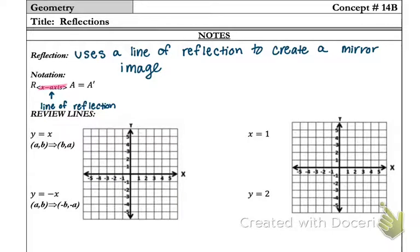So what we're going to do is review some common lines. So the first line is going to be the line y equals x that I'm going to go ahead and draw here. So I have a line that's going through my origin and it has a slope of 1, so it's just going up 1 over 1.